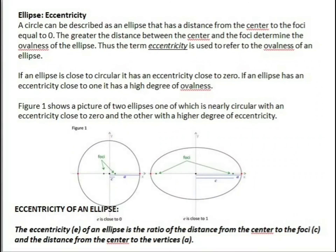Eccentricity: a circle can be described as an ellipse where the distance from the center to the foci is equal to 0. The greater the distance between the center and the foci determines the ovalness of the ellipse. The term eccentricity, denoted by small e, refers to the ovalness of an ellipse. If an ellipse is close to circular it has an eccentricity close to 0; if it has an eccentricity close to 1 it has a high degree of ovalness. Eccentricity is the ratio of the distance from the center to the foci and the distance from the center to the vertices.